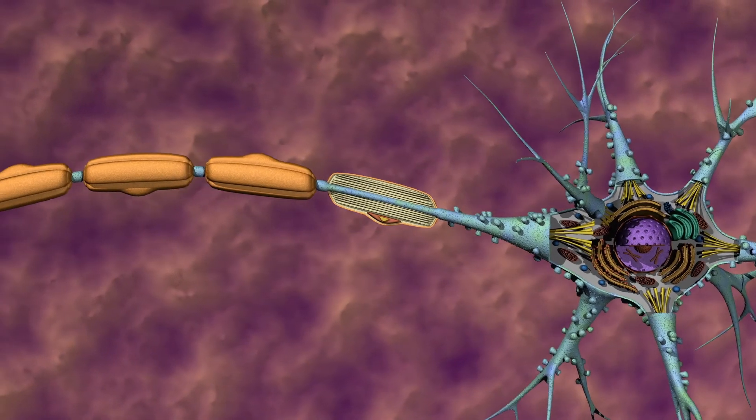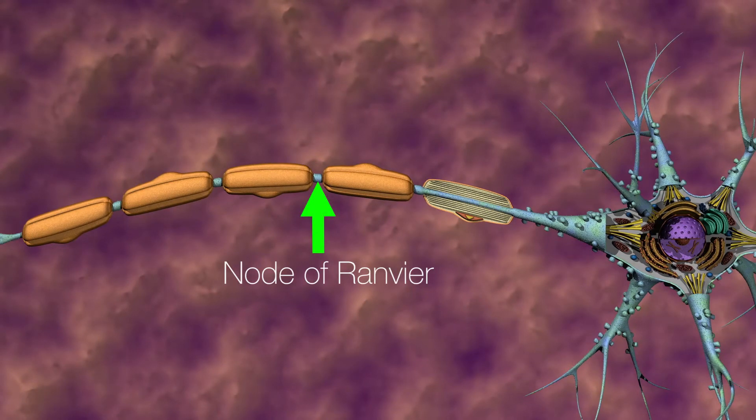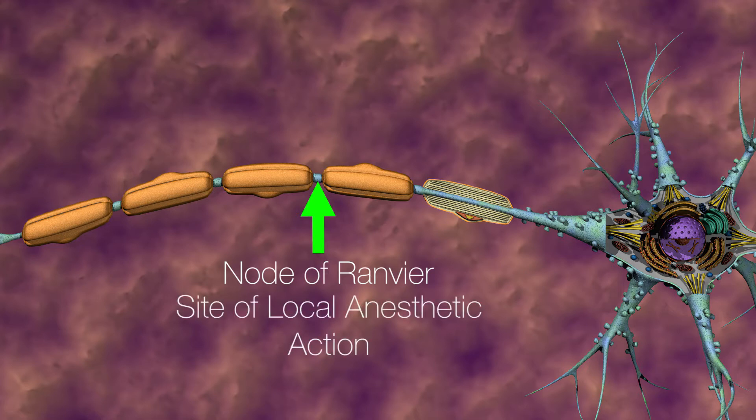Between the Schwann cells are non-myelinated gaps called nodes of Ranvier. These gaps contain voltage-gated sodium channels that propagate the electrical signal. It's also here where local anesthetics exert their effect.